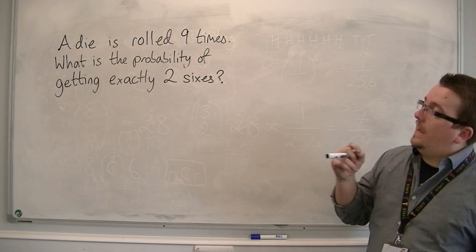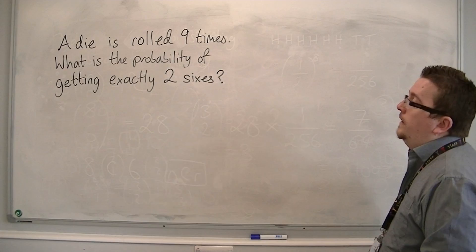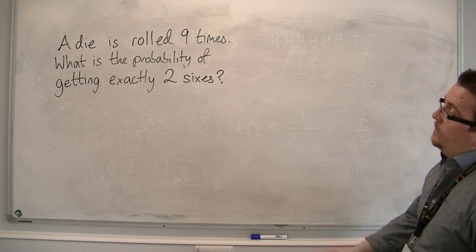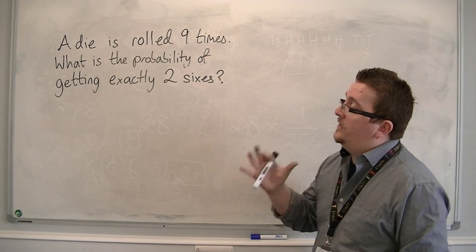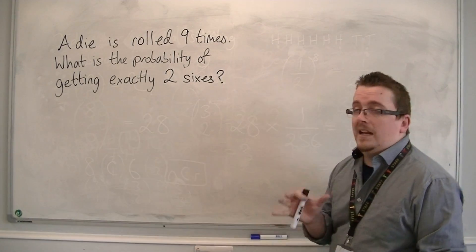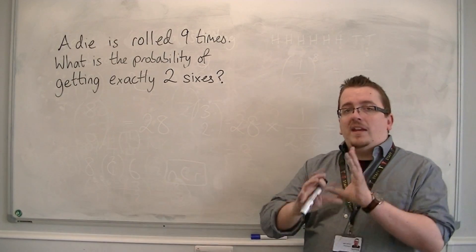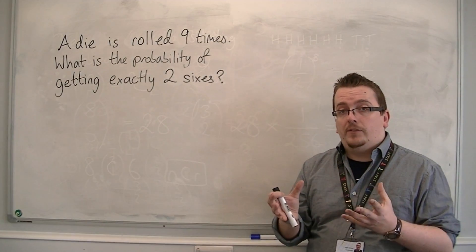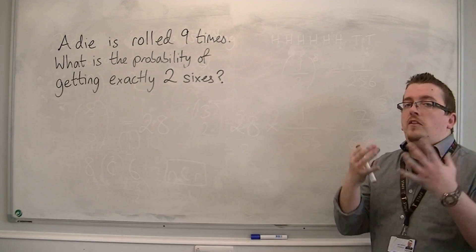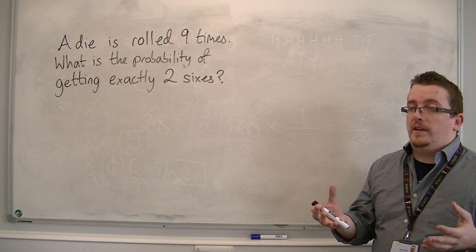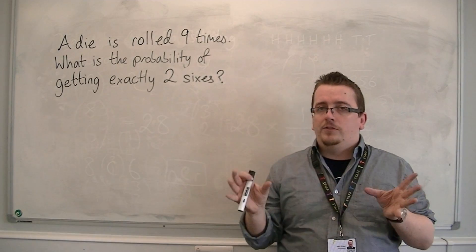So in this case, I'm looking at rolling a die — singular dice — and I'm going to roll it nine times. What is the probability of getting exactly two sixes? The probability of getting a six is one over six, and the probability of not getting a six is five over six, so there are two different probabilities to take account of.